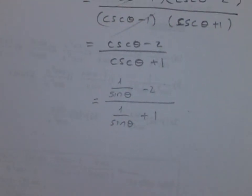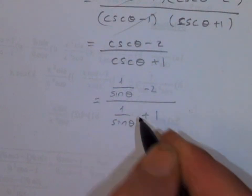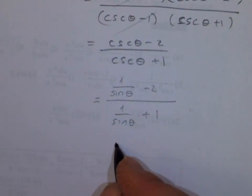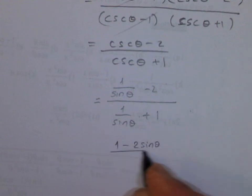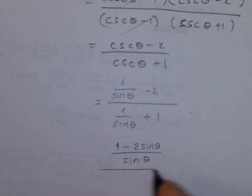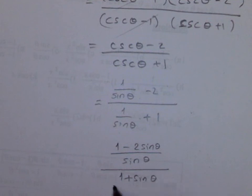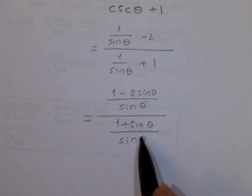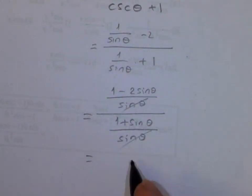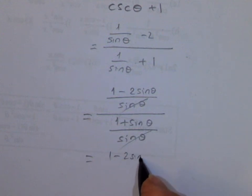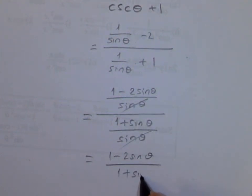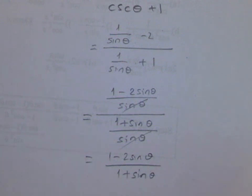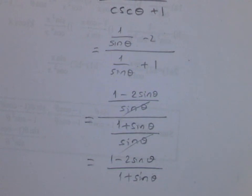Find a common denominator for numerator and denominator. The numerator becomes 1 minus 2 sine theta over sine theta, and the denominator becomes 1 plus sine theta over sine theta. Both have the same denominator, so they cancel, giving a final answer of 1 minus 2 sine theta over 1 plus sine theta.